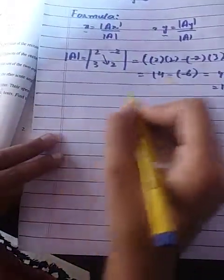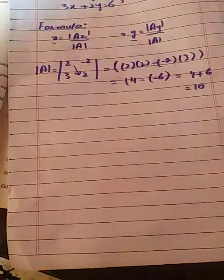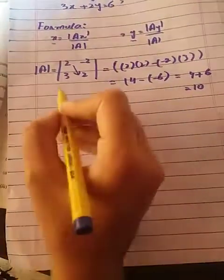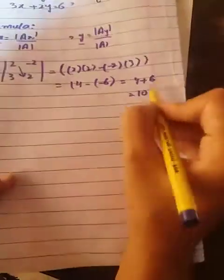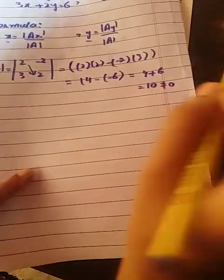|A| mod is 10, which is not equal to zero. This means we can proceed with solving the question. This is the same process.